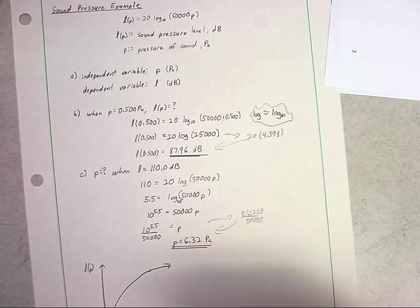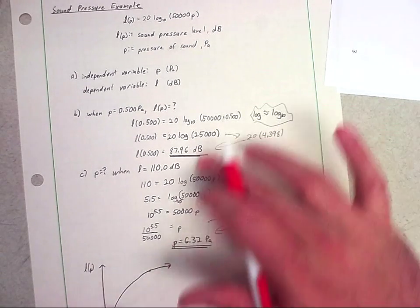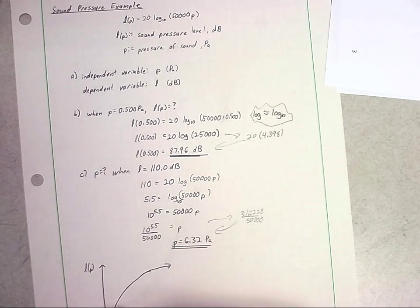Basically, remember, it's the opposite of what we would think of happening with an exponential. An exponential, as you get over here, things go up really rapidly. With a logarithmic, they're going to slow down. They're really rapid here at the beginning and slow down.